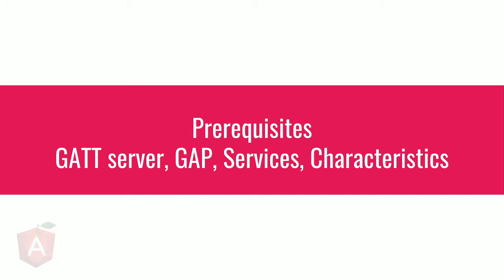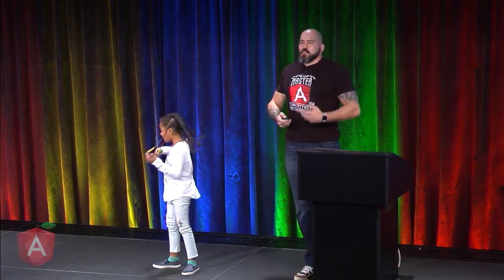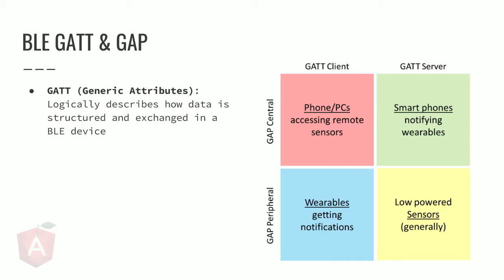Before we go into the implementation, I need to talk to you about GATT server, GATT services, and characteristics. They are essentially part of the Bluetooth specs. GATT stands for Generic Attributes — they are basically a way to define how data is structured and also exchanged between devices. On the chart, you'll see GATT client versus GATT server — which device is actually taking the measurement and which device is fetching the information. The device she is wearing is the server, and the browser becomes the client.